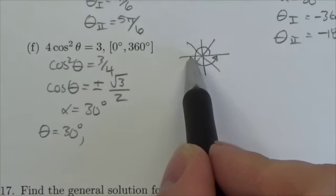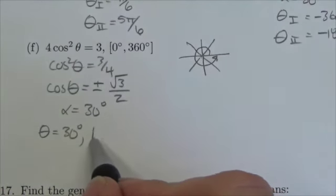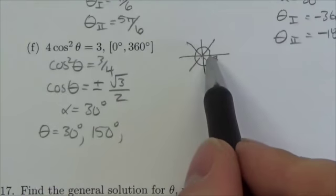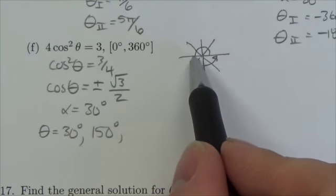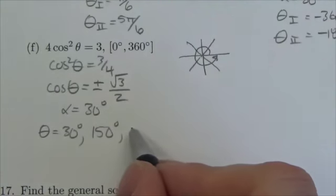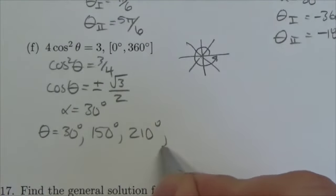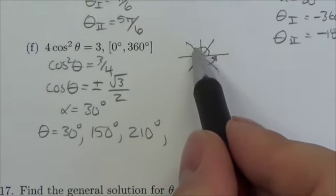In the second quadrant I go to 180 and then go backwards 30, so it'll be 150 degrees. In the third quadrant I go to 180 and then I go forward 30 degrees, so 210.